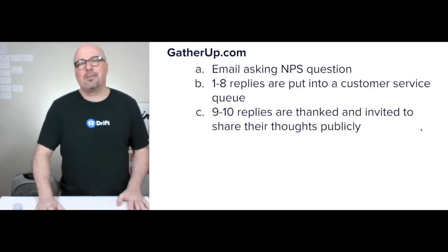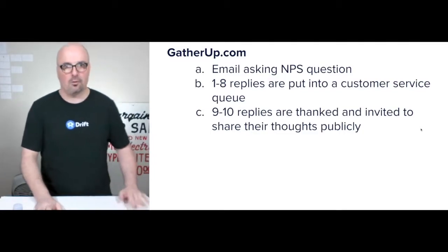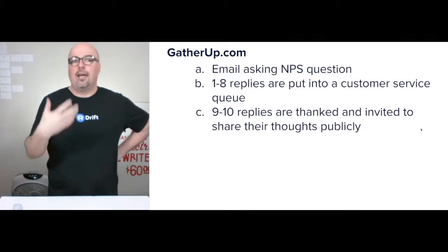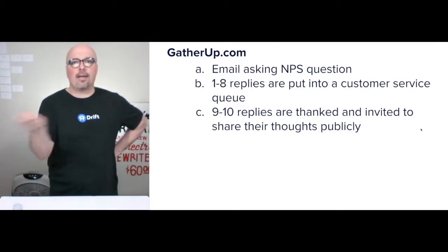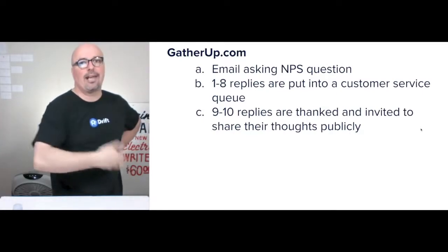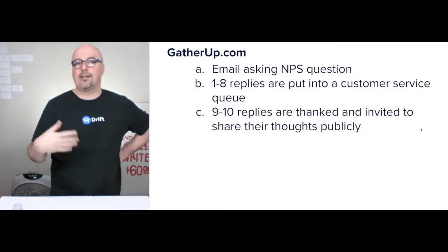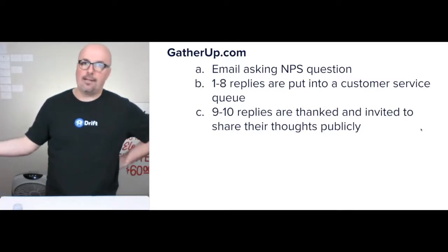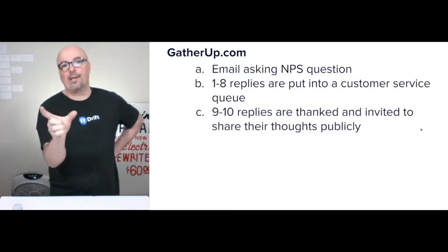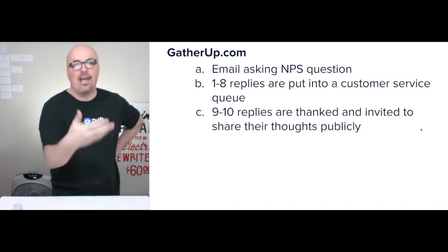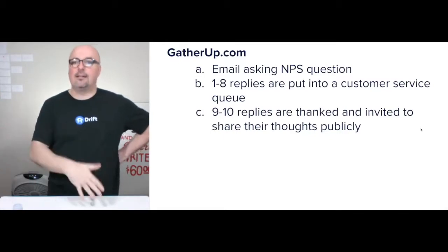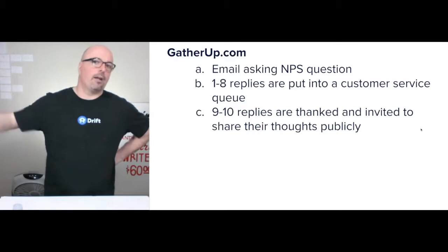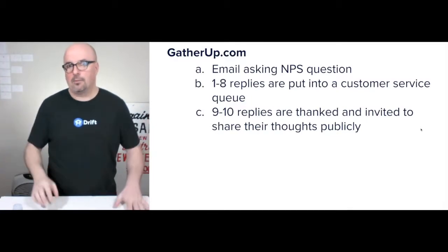The customer feedback loop uses a net promoter score question — I use gatherup.com to do it. Once there's a customer, after the completion of whatever they bought, you take their email, go to gatherup and put it in. Gatherup sends an NPS question: 'On a scale of one to ten, how likely are you to share Raisin Cane?' People who click one to eight get put into a customer service queue. Nines and tens are thanked and invited to share their thoughts publicly, given shortcut buttons to Yelp, Facebook, and other profiles to choose where they want to speak publicly.